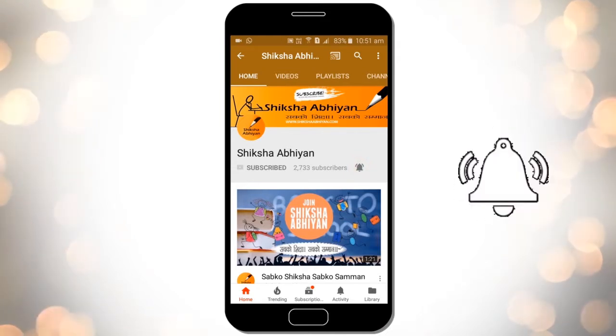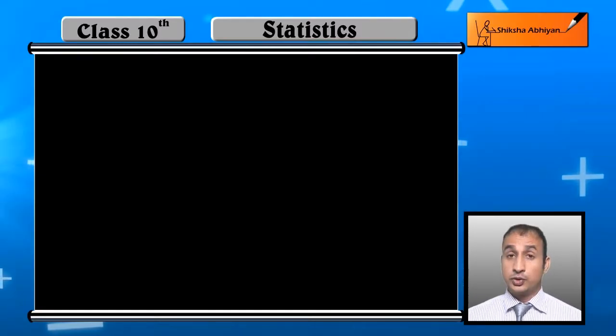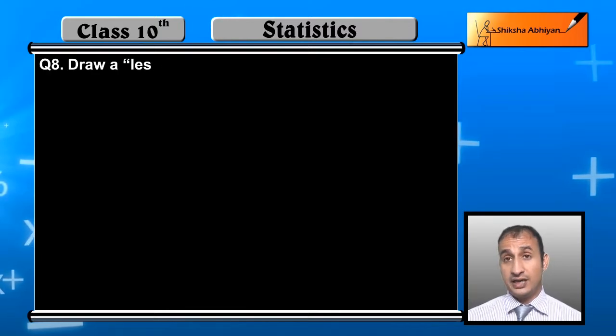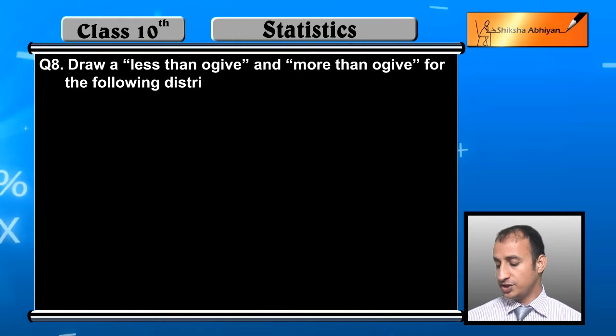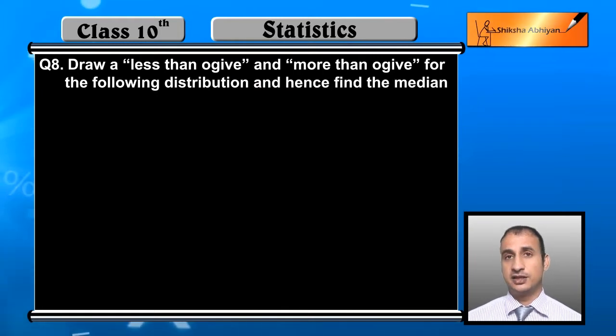The question is: draw less than ogive and more than ogive for the following distribution and hence find its median.